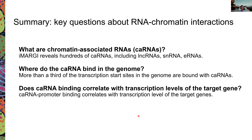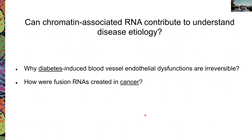Coming back to our key questions: using iMARGI we have identified hundreds of chromatin-associated RNAs including non-coding lncRNAs, small nuclear RNAs, and enhancer-derived eRNAs. These tend to target transcription start sites — even when a gene is not activated, there is often already accumulated chromatin-associated RNA on its promoter. We observed a positive correlation between the amount of CA-RNA accumulating at a promoter and the transcription level of that gene.